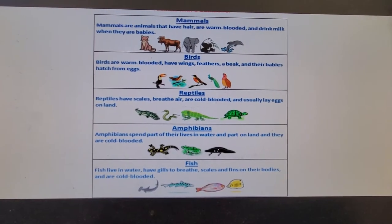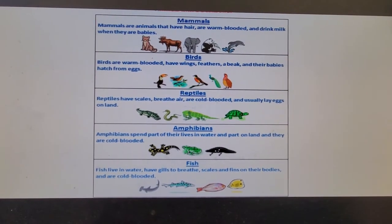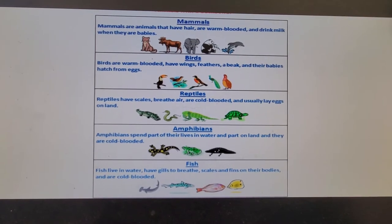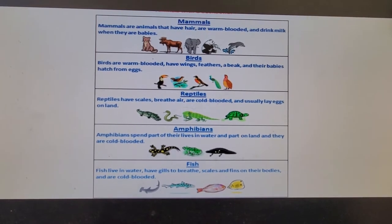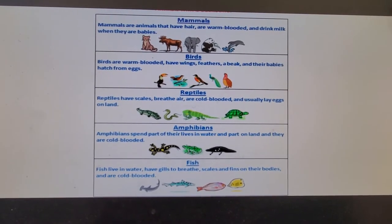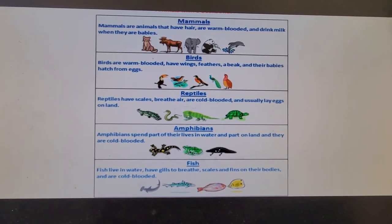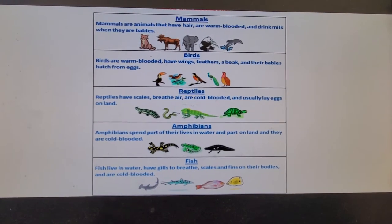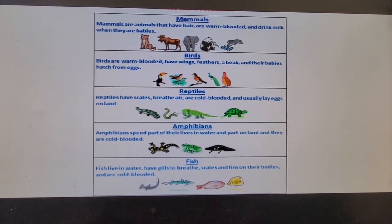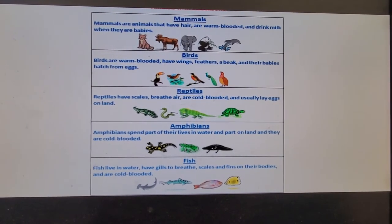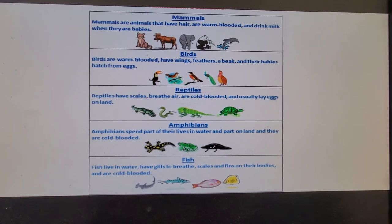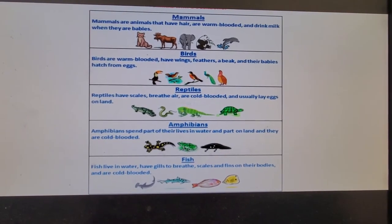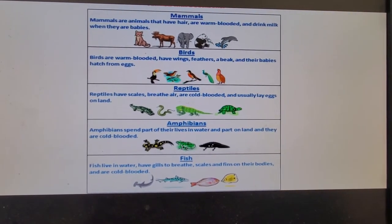Welcome back to biology, animals part 2. In our first presentation we mainly went over our invertebrate group, which are the animals that do not have backbones. We are going to go over our vertebrate group today. Keep in mind that our invertebrate group are the most diverse on the planet — there are more of those on the planet than there are vertebrates.